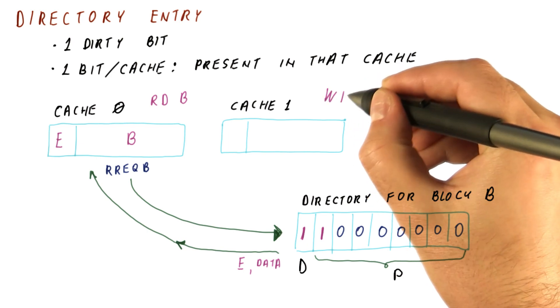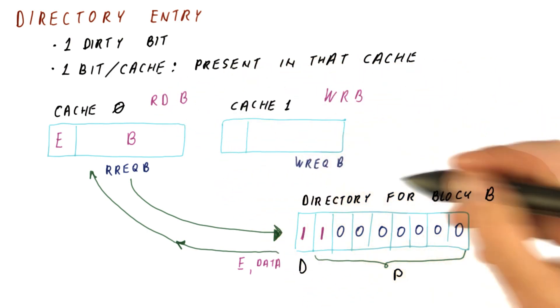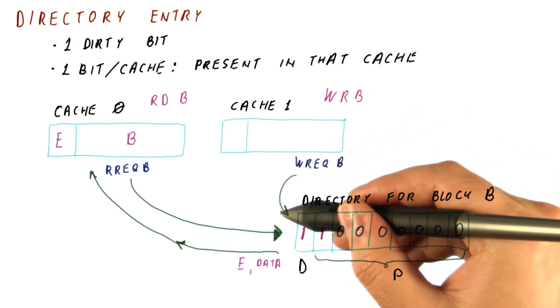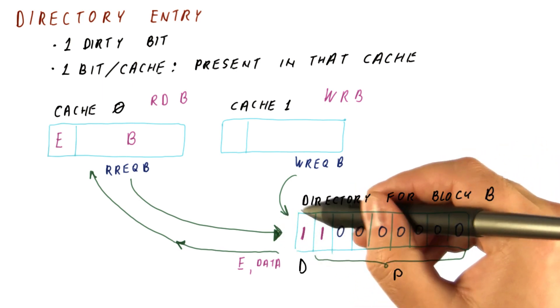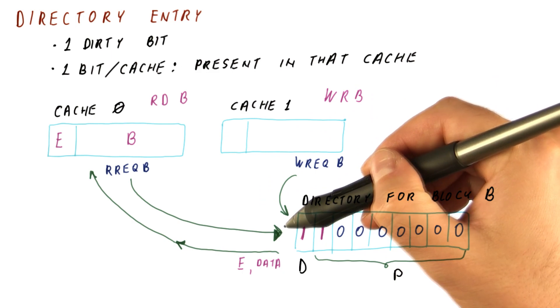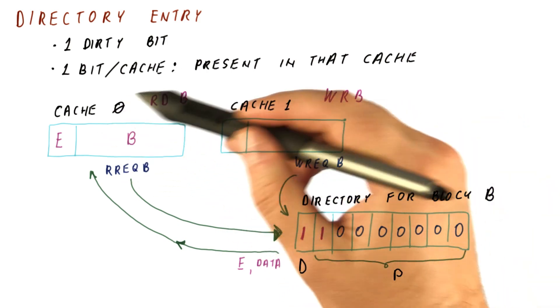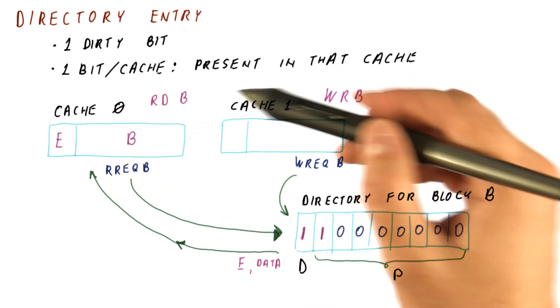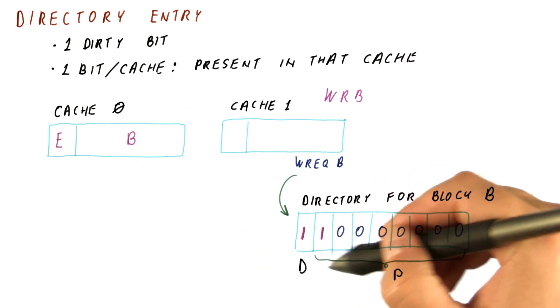And now, between these two messages, the directory controller needs to select one. In this case, it chose read request first. So officially, this read happened before this write. So the core here gets to read the block B, and only then the write gets processed by the directory.